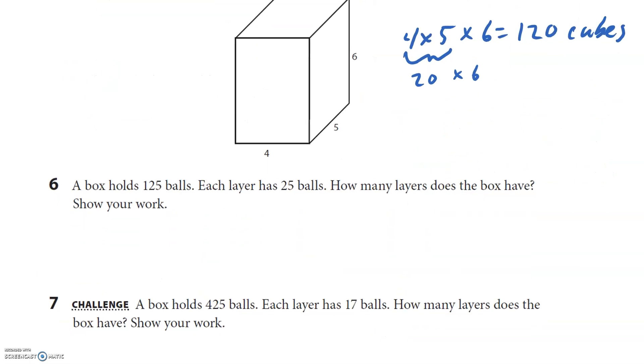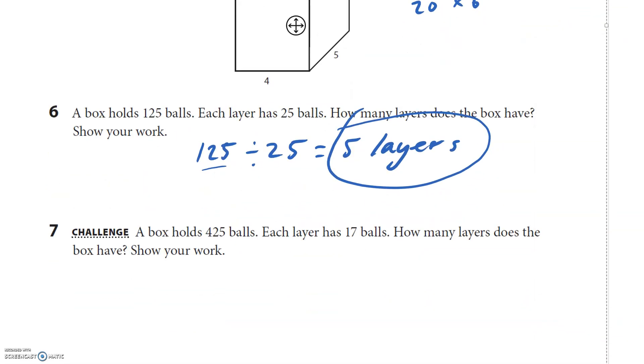A box holds 125 balls. Each layer has 25 balls. So I need to figure out how many layers go in 125. So basically I'm going to go 125 ÷ 25. And I'm just going to count by 25s, to be honest with you. 25, 50, 75, 100, 125. So I believe it's five layers. There's so many other ways we can do that. You could use a ratio table, you could do the division algorithm. We're not going to necessarily focus on that this year, but if you know it, you could try it.